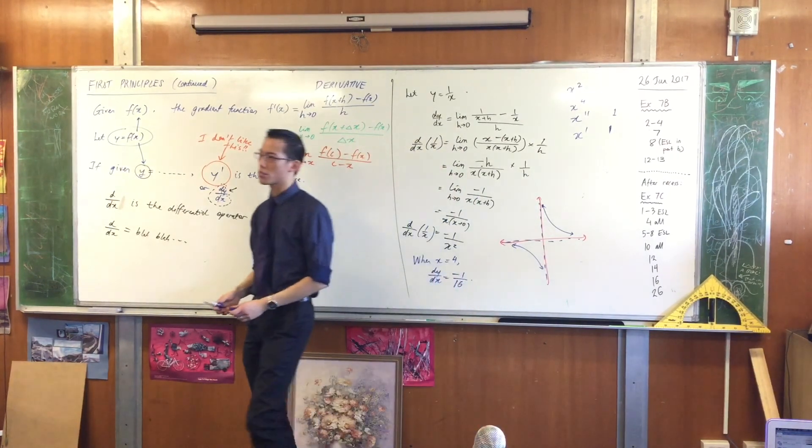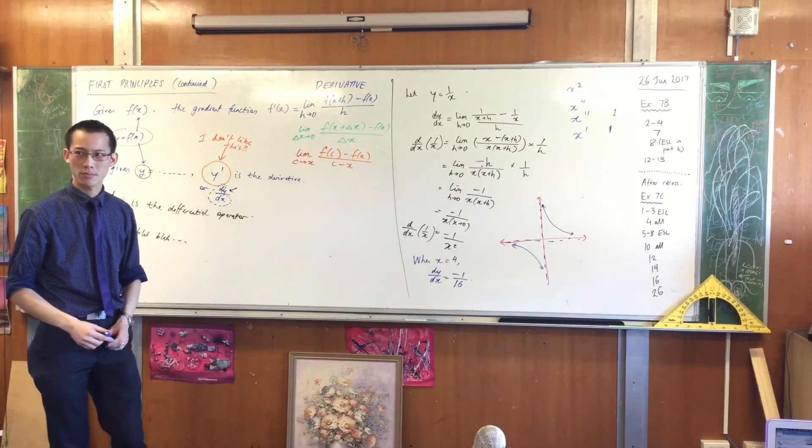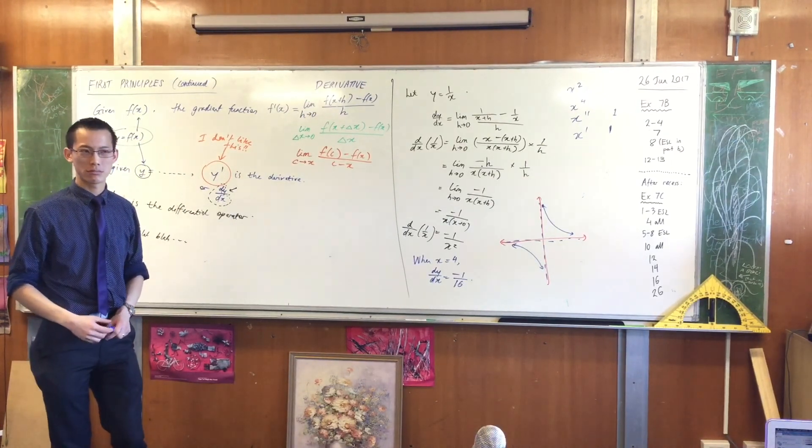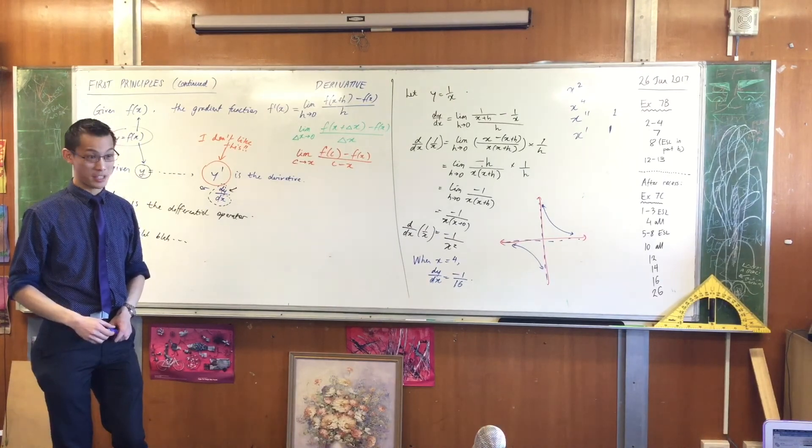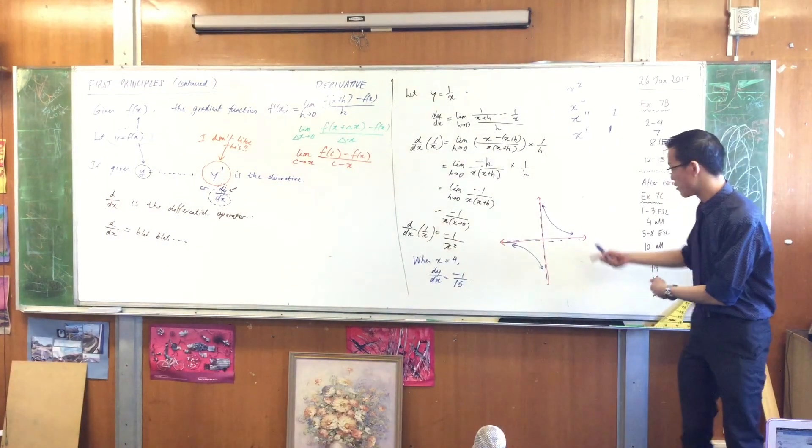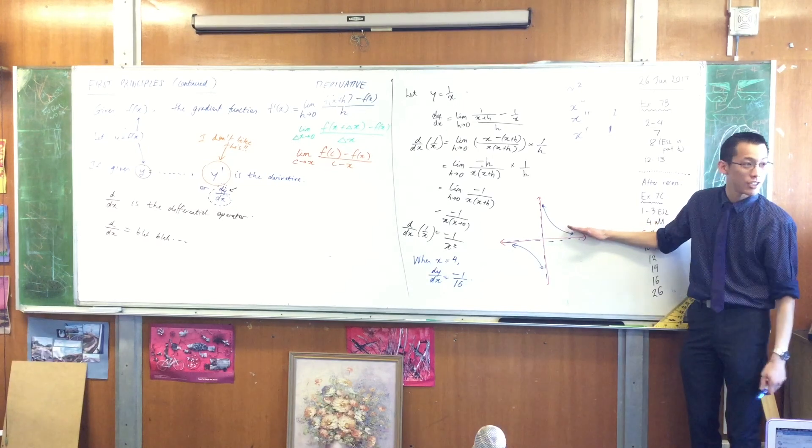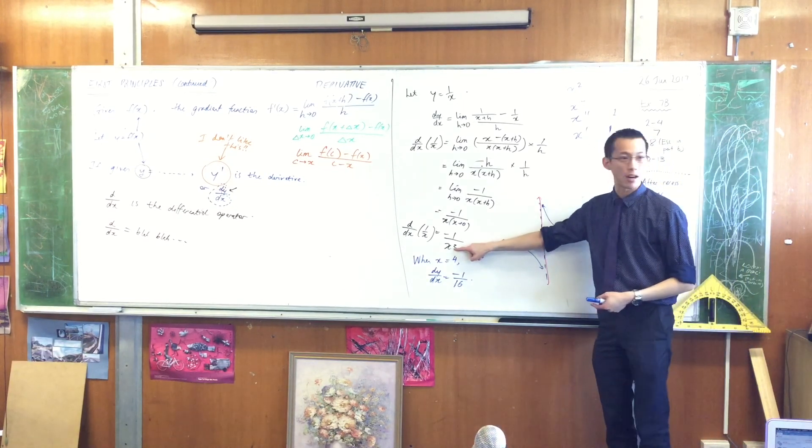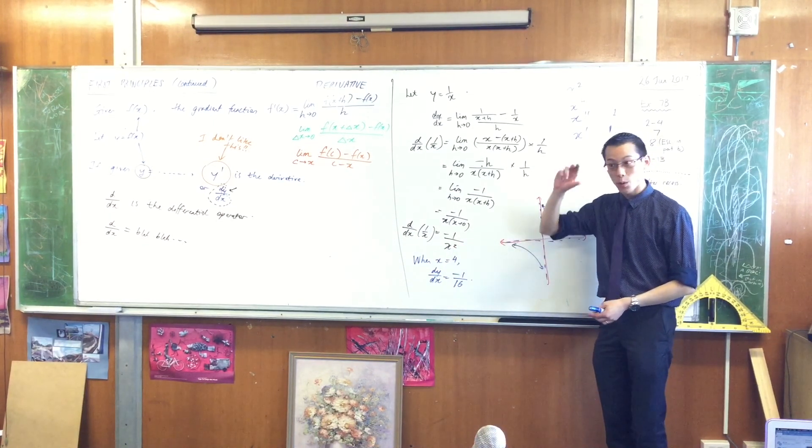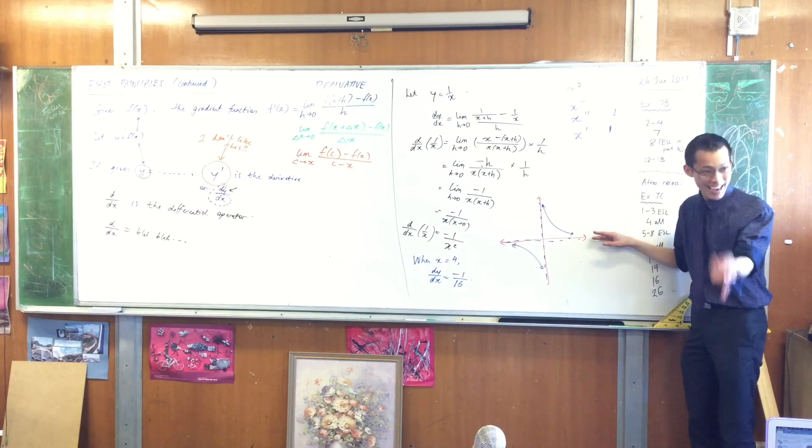Now, tell me, how would you describe a line with a gradient of minus 1 over 16? What does the minus tell you? It's decreasing. It's decreasing. What about the 1 over 16? What does that tell you? It's small, which means shallow. Which makes sense, because where would x equal 4 be? Somewhere over here. And you can see, of course, it's very shallow. And as x gets bigger and bigger, what happens to the gradient? The gradient gets smaller and smaller. It gets closer to 0. Of course it does, because what's it approaching? It's approaching an asymptote.